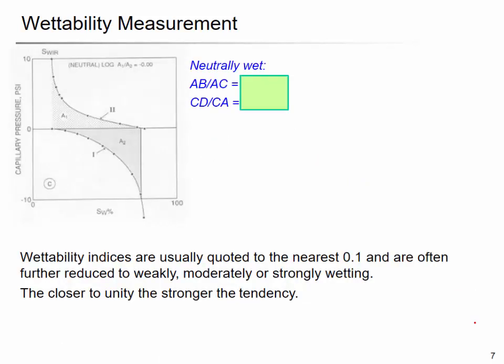If you have a mutually wet system, there will be almost zero spontaneous imbibition, so the wettability index for water and the wettability index for oil will both be close to zero. These indices are usually quoted to be nearly 0.1, and often further reduced to weakly, moderately, or strongly wetting. Close to the unity value means stronger wetting intensity.